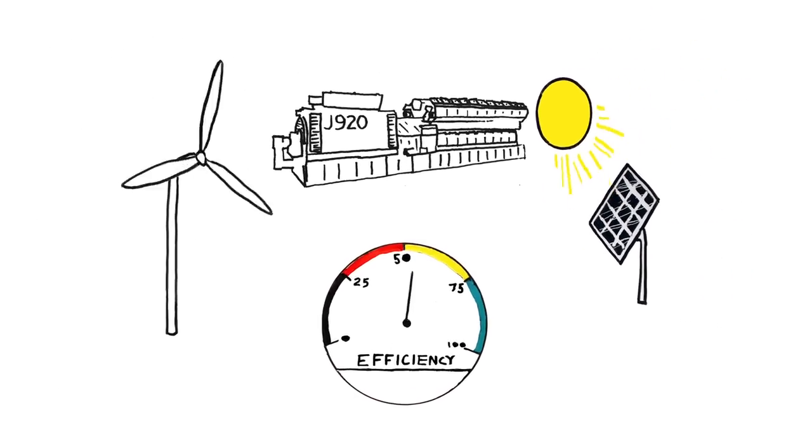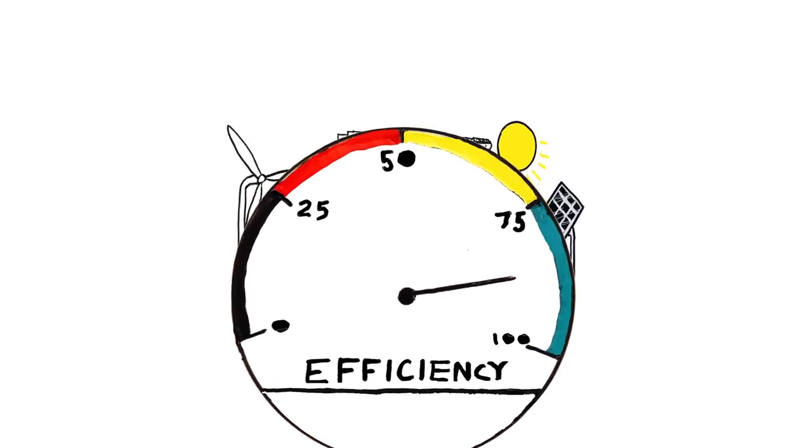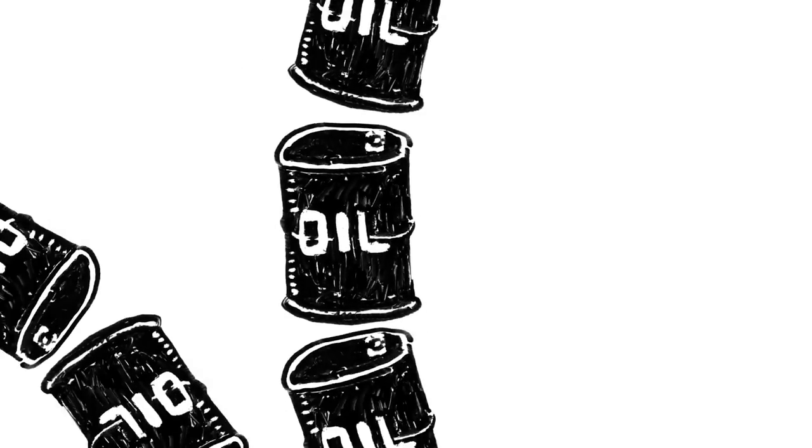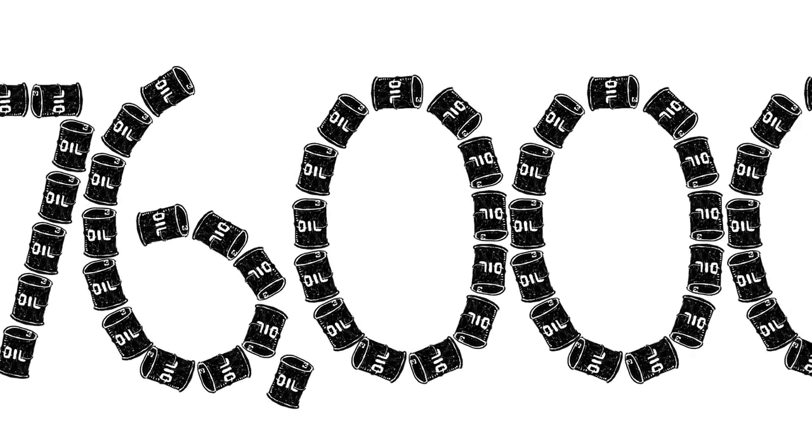Efficiency is important because it means we can use fewer resources to create power. Every year, we could save as much as the amount of energy in 76,000 barrels of oil.